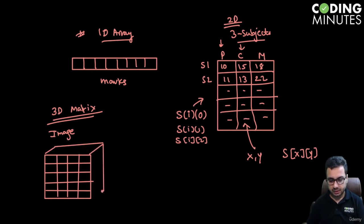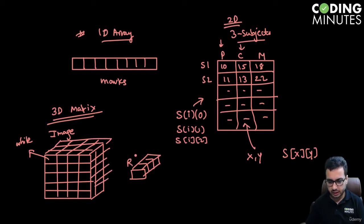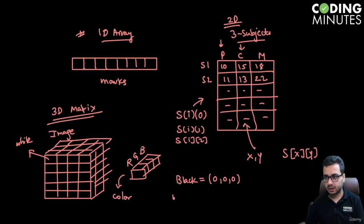Each pixel has three components: one component of red, another of blue, and another of green. When you mix these values together, you see a color. For example, the black pixel is represented as 0, 0, 0.